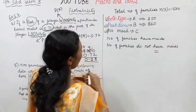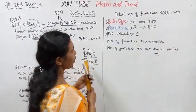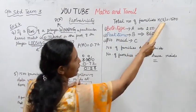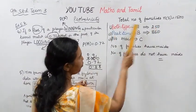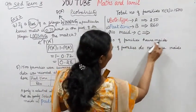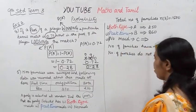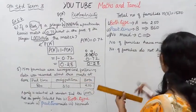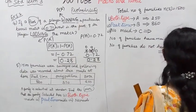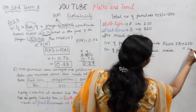Both type: 250, part-time: 860, no maids: C. Number of families that have maids — part-time, full-time, and both — is 860 plus 370 plus 250, which equals 1480. Total number of families is 1500.